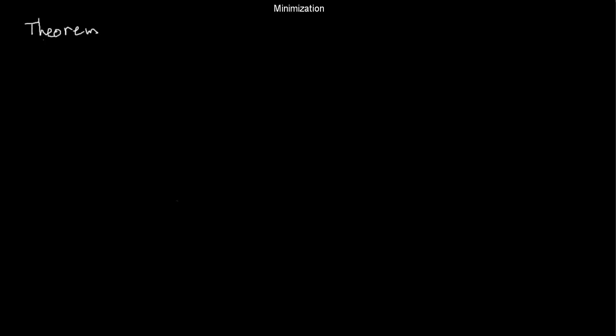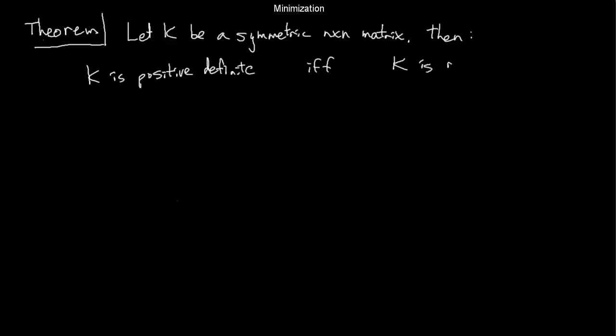Let's start this video with a theorem. We talked last time about positive definite matrices and what's going on with 2 by 2 matrices. Let's start with a symmetric n by n matrix K. I'll give you the criterion for what it means for K to be positive definite. K is positive definite if and only if K is a regular matrix.